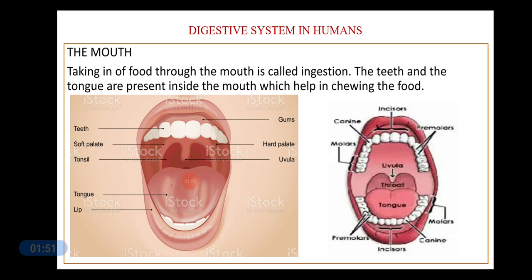Inside your mouth you have the tongue, the epiglottis which is further inside, the soft cheek inner linings, and the teeth embedded in the gums. There is a hard and soft palate present inside. Just behind the teeth there is a hard roof portion — that is the hard palate — and near the epiglottis it becomes soft, which is the soft palate.